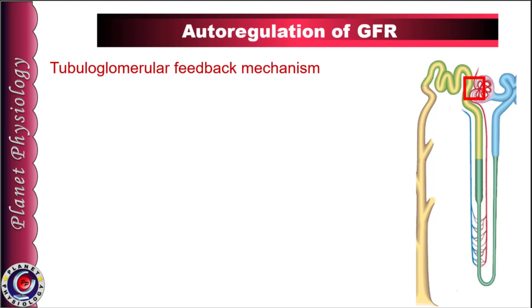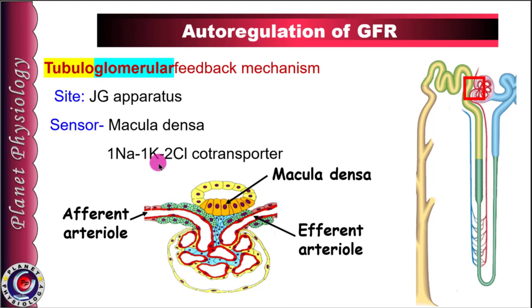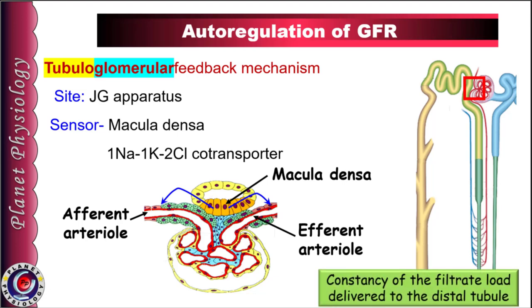The second mechanism of autoregulation is tubuloglomerular feedback. As the name suggests, the sensor for this feedback is the renal tubule and the effector organ is the glomerulus. This feedback operates at the level of the JG apparatus, where the sensor is the macula densa. Macula densa cells possess 1 sodium, 1 potassium, 2 chloride co-transporters in their apical membranes, which allow them to detect changes in NaCl concentration in the filtrate reaching the distal tubule. Macula densa initiates signals that act on afferent and efferent arterioles to modulate filtration by the glomerular capillaries, thereby maintaining filtrate load delivered to the distal tubules.